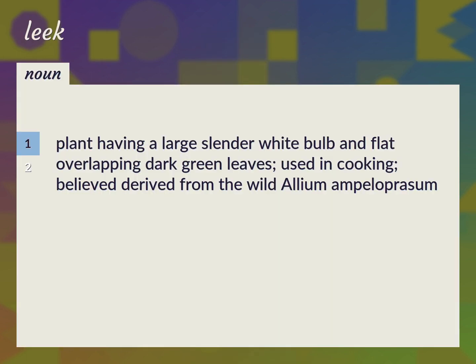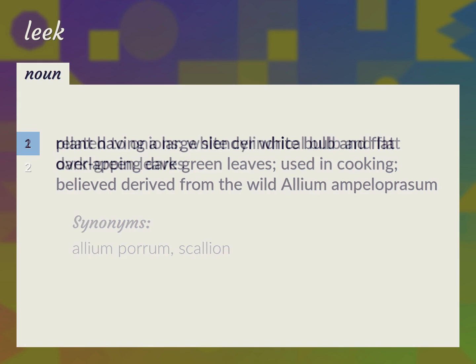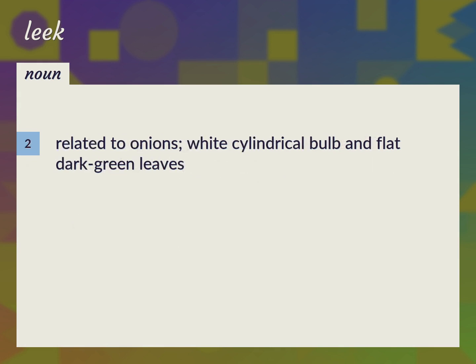Plant having a large slender white bulb and flat overlapping dark green leaves. Used in cooking. Believed derived from the wild Allium ampeloprasum. Allium porrum, scallion. Related to onions. White cylindrical bulb and flat dark green leaves.